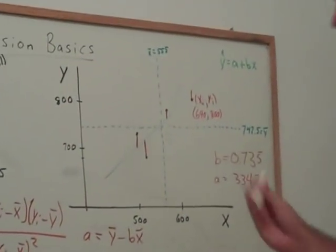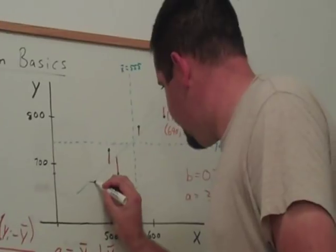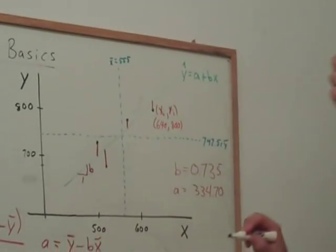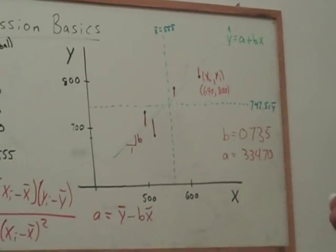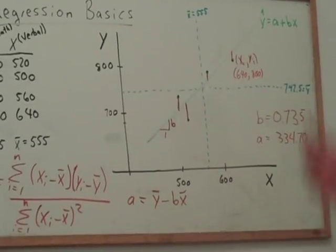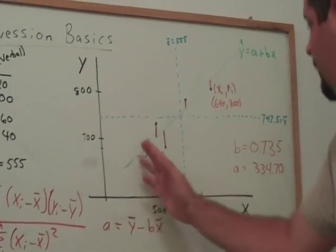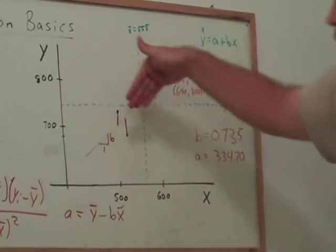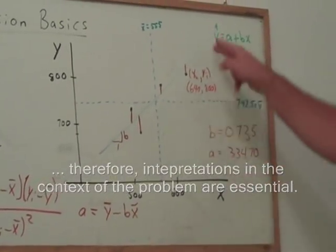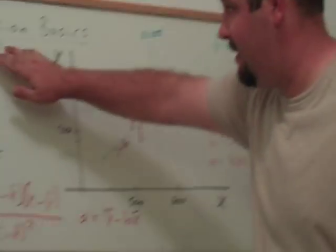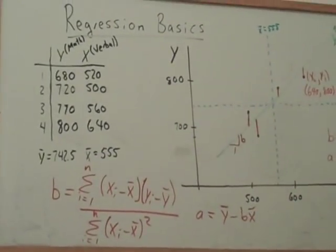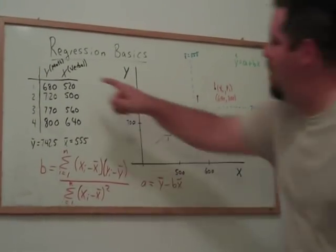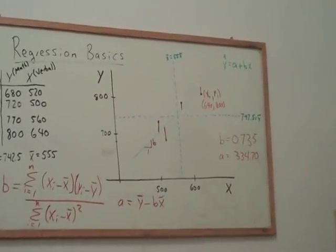Interpretation of a slope is, if you go over 1, the slope is how much you go up. That's the equation of the line. That's sort of, that is our interpretation of the equation of the line. So, in other words, for every x increase in 1x, we would predict that y goes up by the amount of the slope. In this case, in the context of this, for every 1 point increase in my verbal score, we would predict that my math score increases by 0.73.